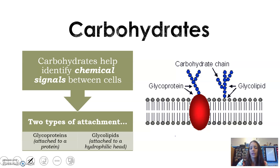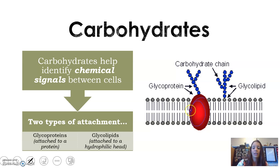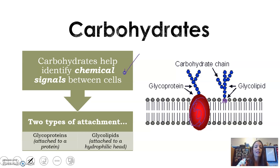Carbohydrates are the third major thing to be aware of in the cell membrane — they help identify chemical signals. They're either attached to a protein like an antenna, or attached to the phospholipid head. Either way, they help with signaling.